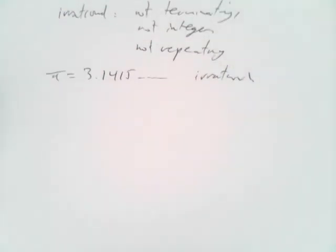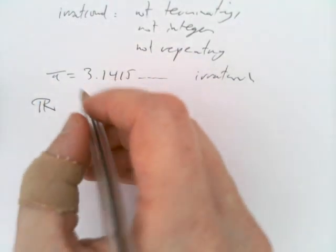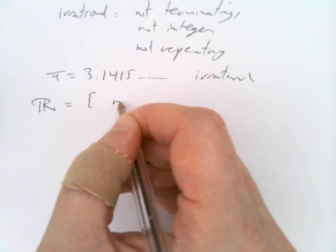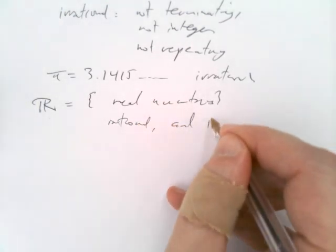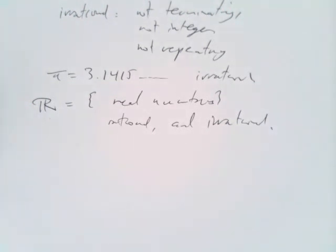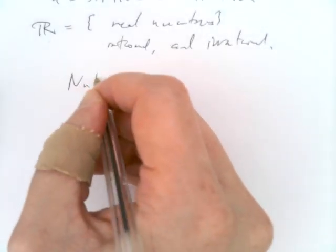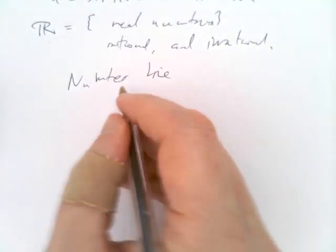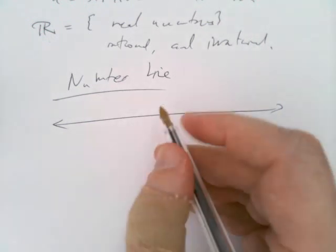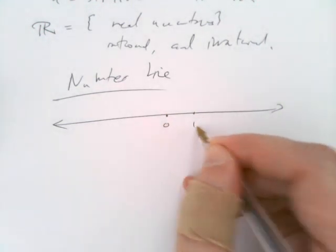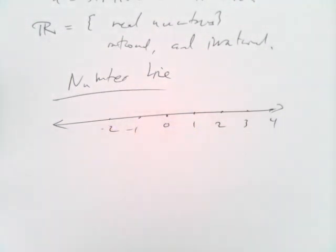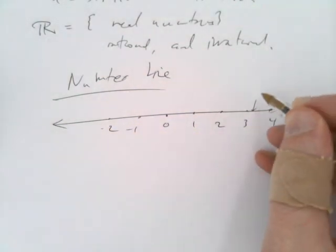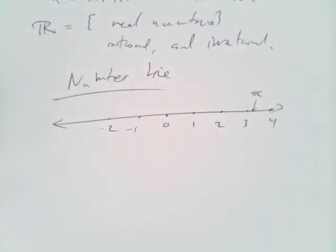We've got all the numbers put together. R with two backs to it is the set of all real numbers — that includes the rational and the irrational. Both the rational and irrational numbers make up the real numbers. We can look at a picture of the real numbers by looking at the number line — this infinitely long line. Somewhere on it there's a zero, a one, a two, a three, and so on; minus one, minus two, and so on. Pi is about 3.1, so pi sits somewhere in there.